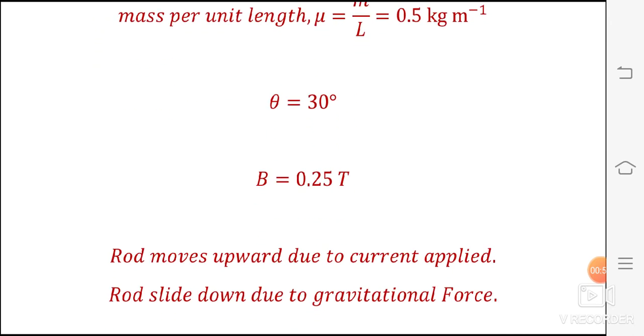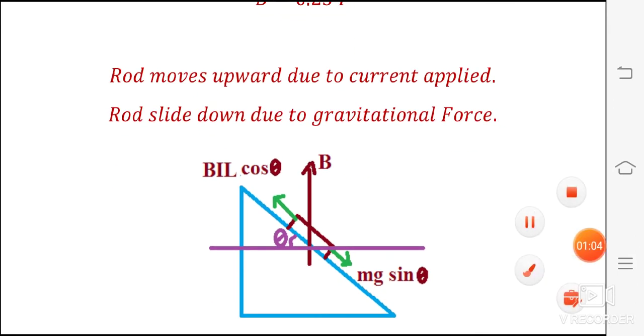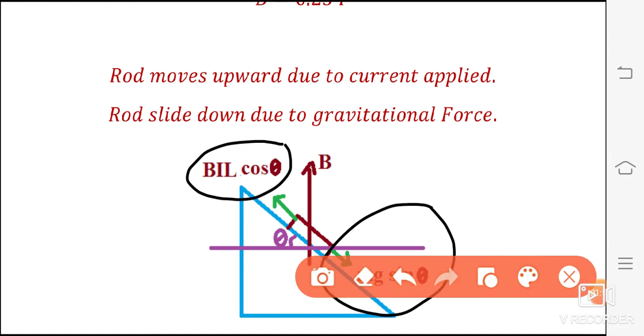So assume that the rod moves upward due to current applied. Rod slides down due to gravitational force. So upward force is bil cos theta and downward force is mg sin theta.